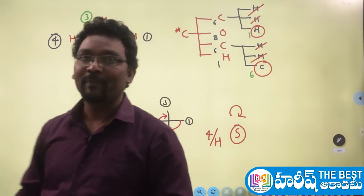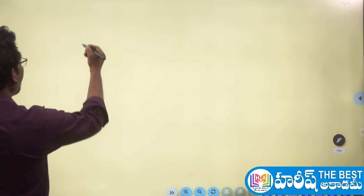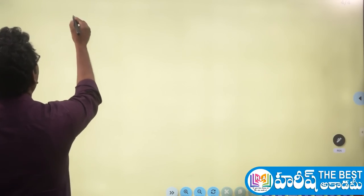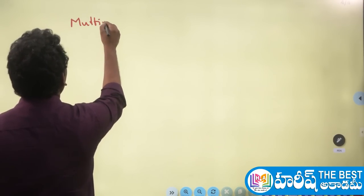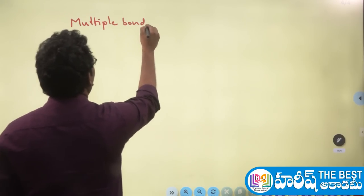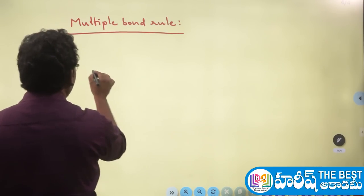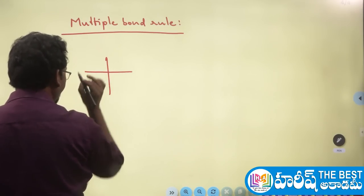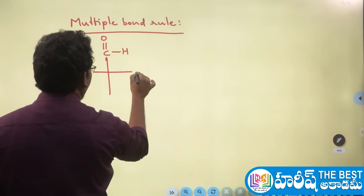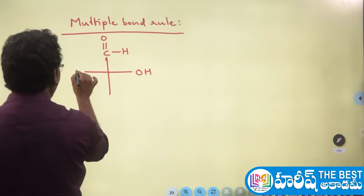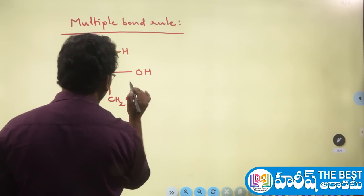The third CIP rule is the multiple bond rule. For example, consider glyceraldehyde: a molecule with an aldehyde group at top, a hydroxyl group at right, hydrogen at left, and CH₂OH at the bottom. The central carbon is the chiral carbon. We need to assign priorities according to the multiple bond rule.